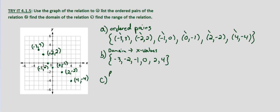Then we're asked to find the range of the relation. And that's going to be the set of y values. So looking at our ordered pairs, the y values are 3, 2, 0, negative 1, negative 2, negative 4. I'm going to go ahead and list them in ascending order.